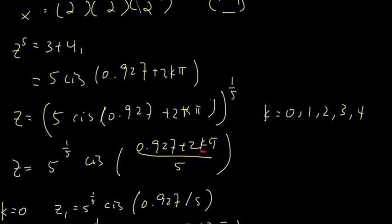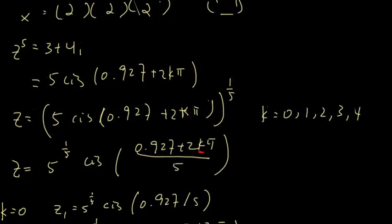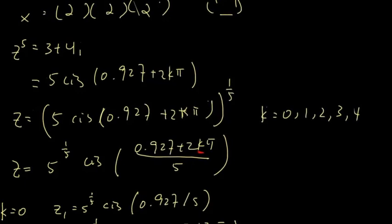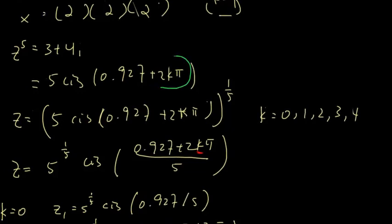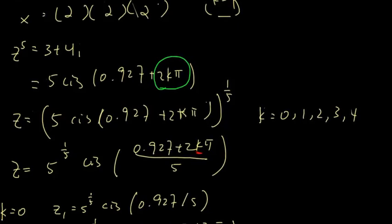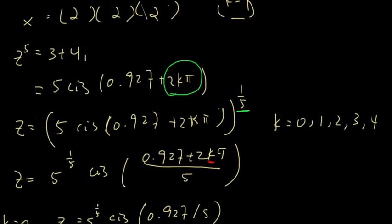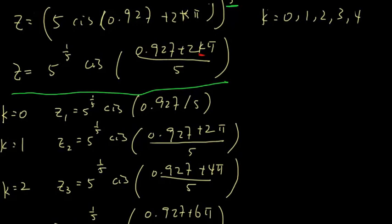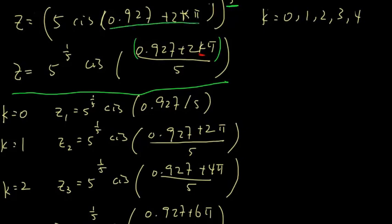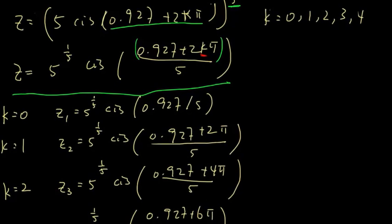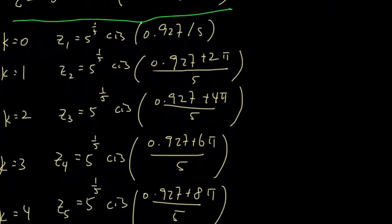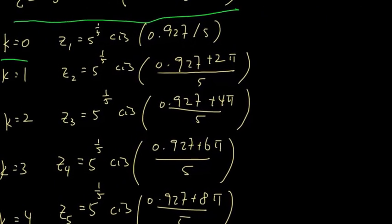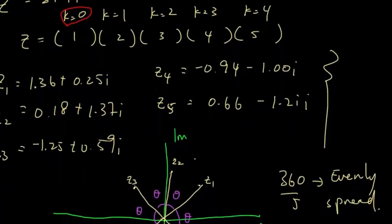Our first step is to draw 3 plus 4i on the Argand diagram, obtain the polar form, then add 2kπ. Next, get rid of the fifth power by raising the right-hand side to the power of 1 over 5. From De Moivre's theorem we obtain the equation, keeping in mind that dividing by 5 means everything in the argument is divided by 5. We then iterate from k=0 to k=4 and obtain the rectangular form — that is our solution.